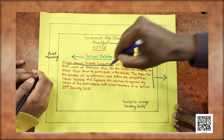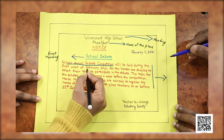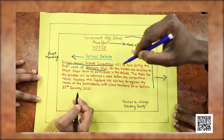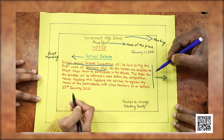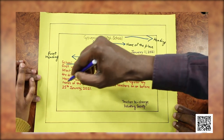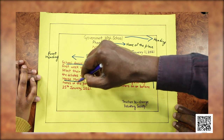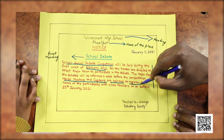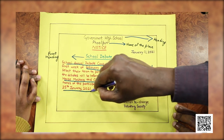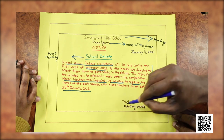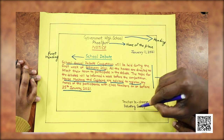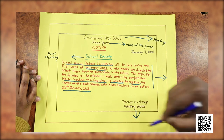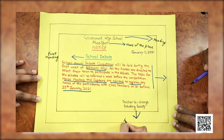In the body of the notice we have the name of the event, the date of the event — first week of February — and what is expected of the people concerned with the notice. Here, house masters and captains are advised to register by 25th January 2021. And this at the end — the teacher in charge — that is the notice giver, the name of the person who gives the notice.